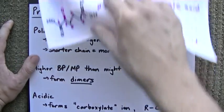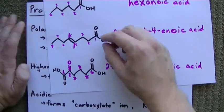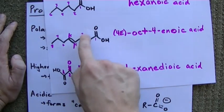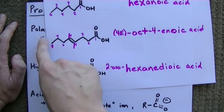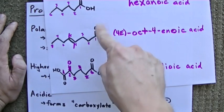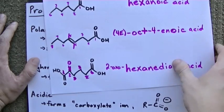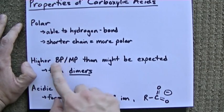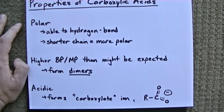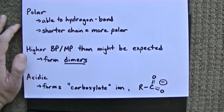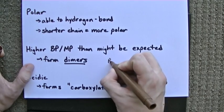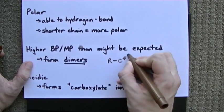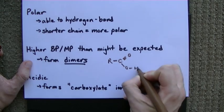That makes sense, because for extraordinarily long molecules, sure, this end is kind of polar, but by the time you get to the end, those carbons don't even recognize that there's a polar end to the molecule. So shorter ones are more polar. Again, the hydrogen bonding gives us high boiling and melting points. But the other thing to point out is that these things form dimers. This is kind of cool. This happens even in the gas phase.